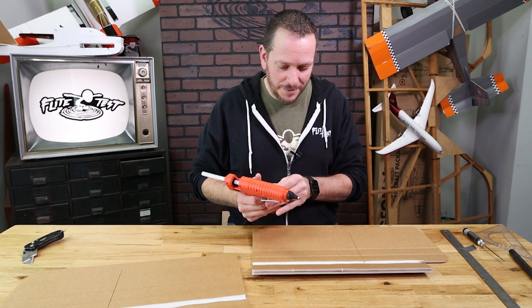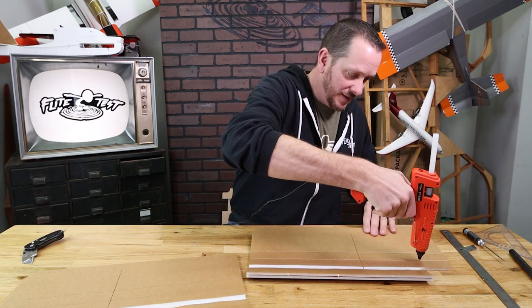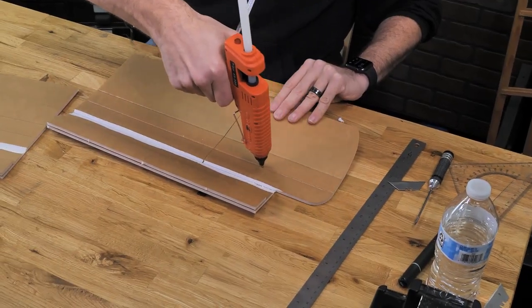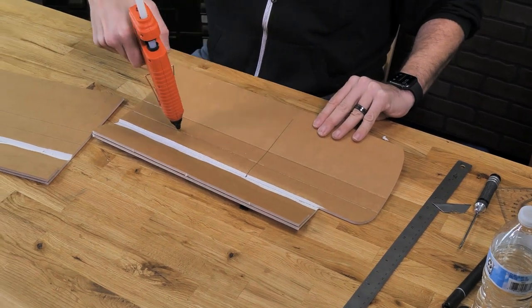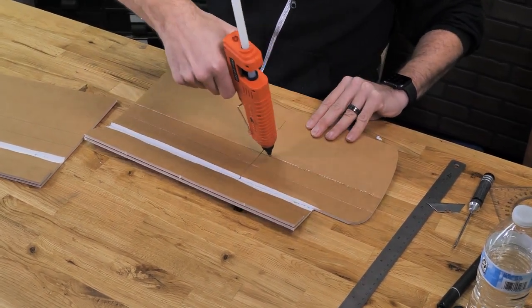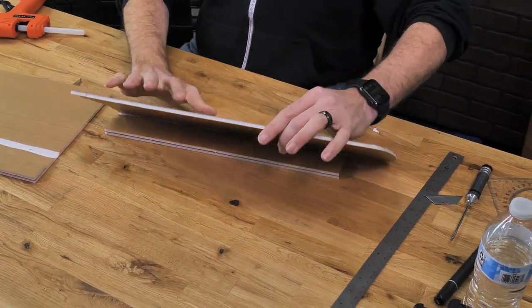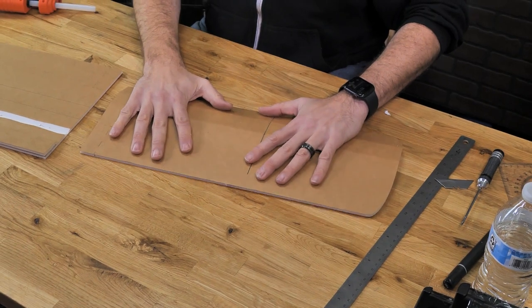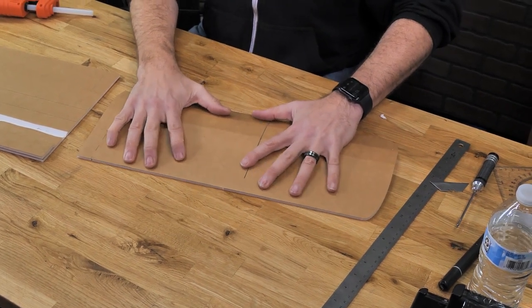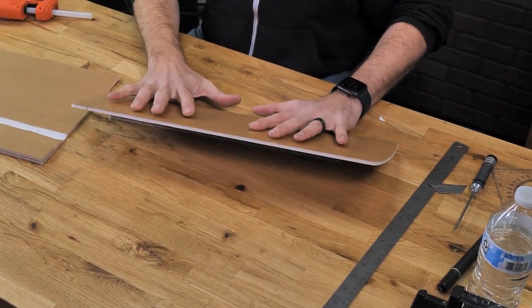And as we fold this over, you're going to notice that the wing now takes on an airfoil shape because of that spar placement. After we practice this a couple of times, we're going to place a very thin bead of glue right in the score cut, making sure we don't put too much on there.